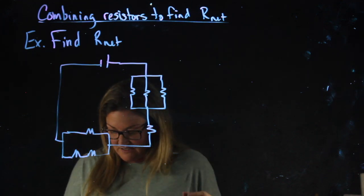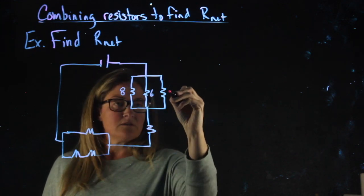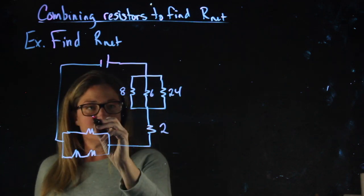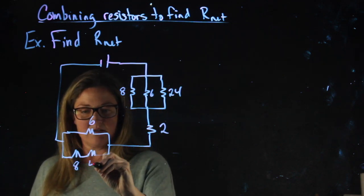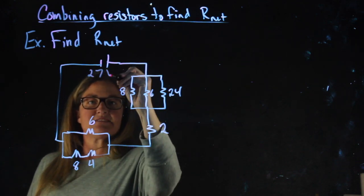Labeling my resistances: 8, 6, 24, 2, 6, 8, 4. My battery is 27 volts.